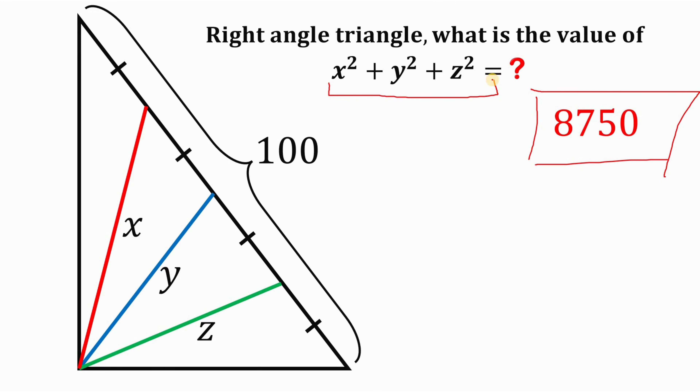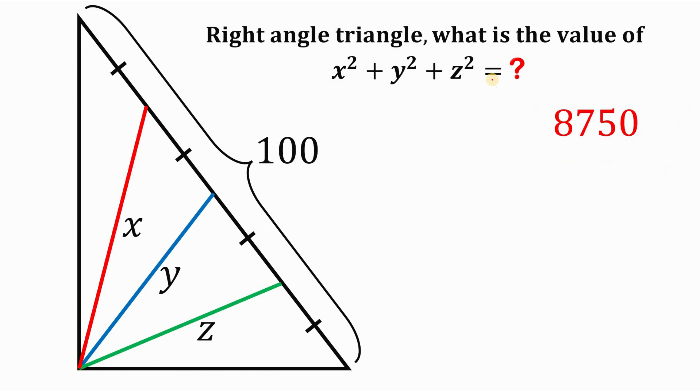Now the question is: how do we get 8,750? To answer this question, we will use two concepts.